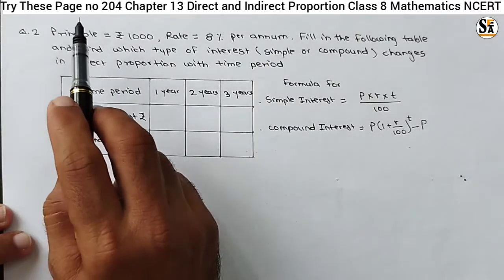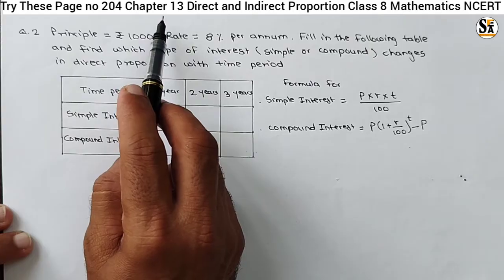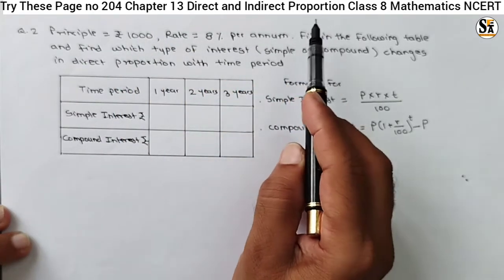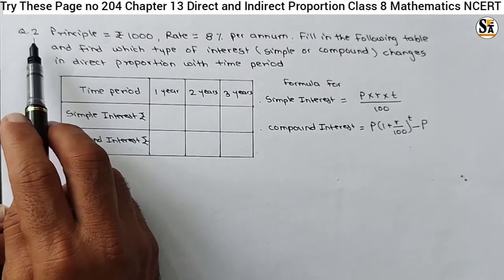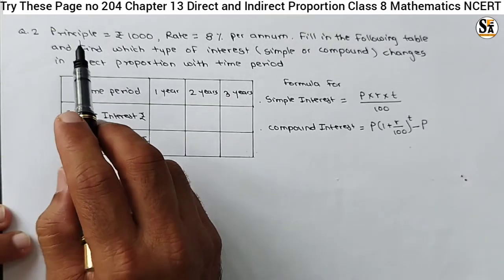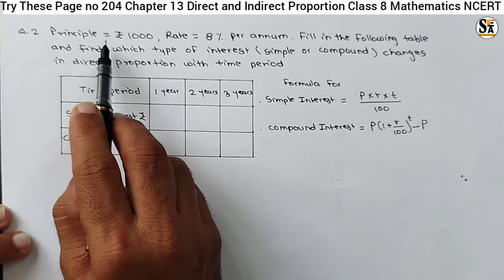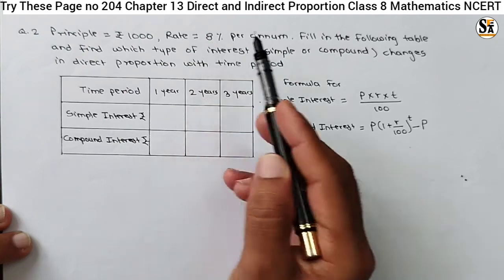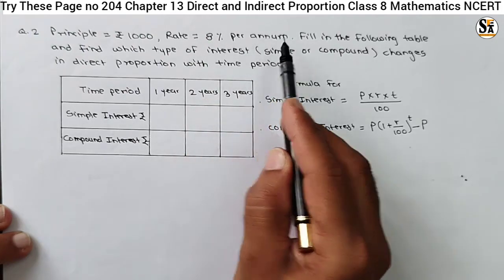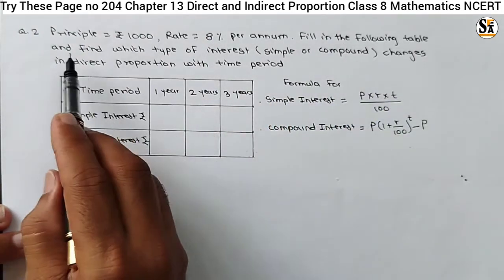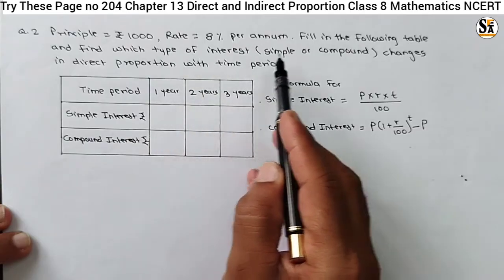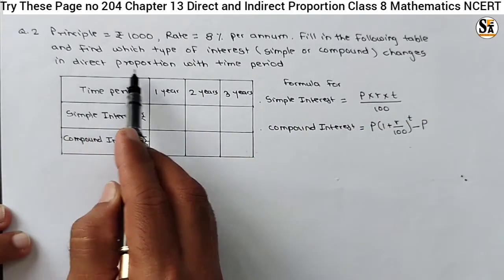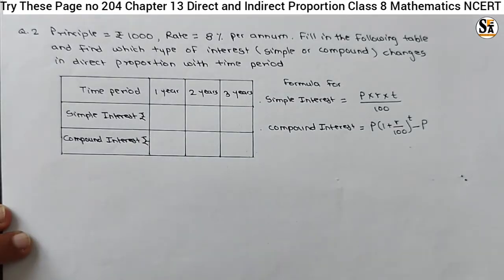See the question under the Trizy section, page number 204, chapter Direct and Inverse Proportion, class 8 mathematics. Question number 2 is given on this page. Principal equal to Rs 1000, rate equal to 8% per annum. Fill the following table and find which type of interest — simple or compound — changes in direct proportion with the time period.